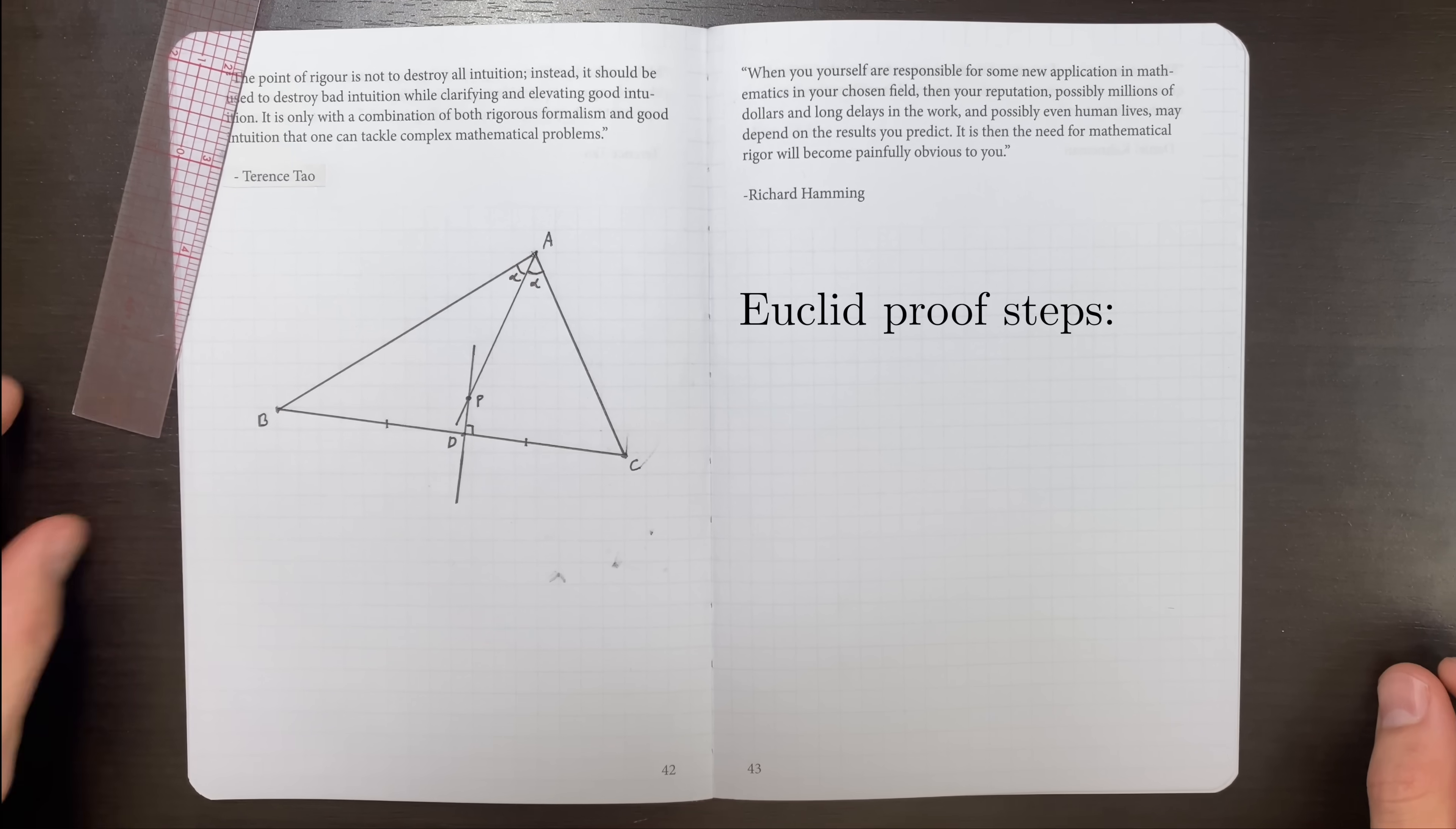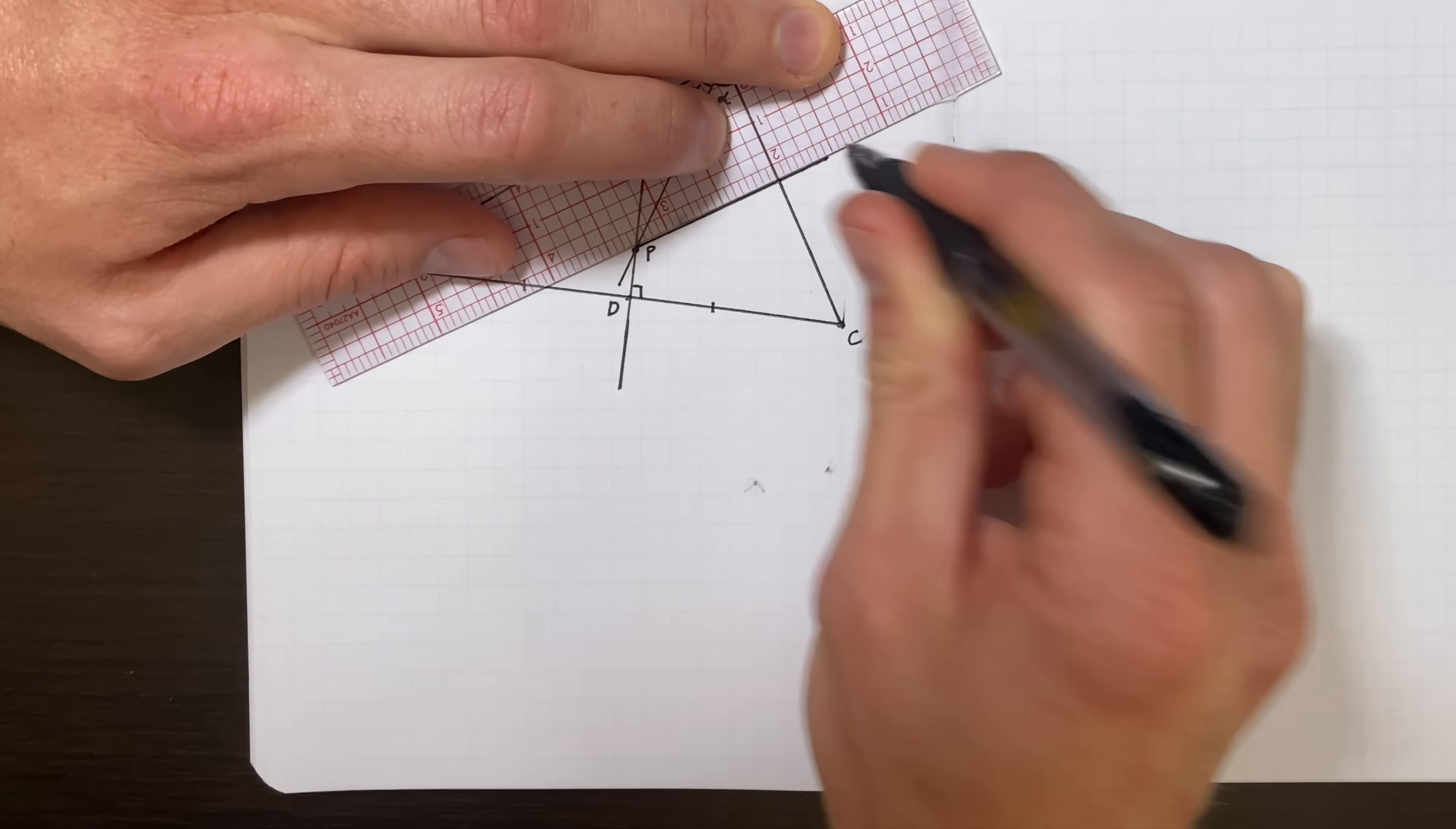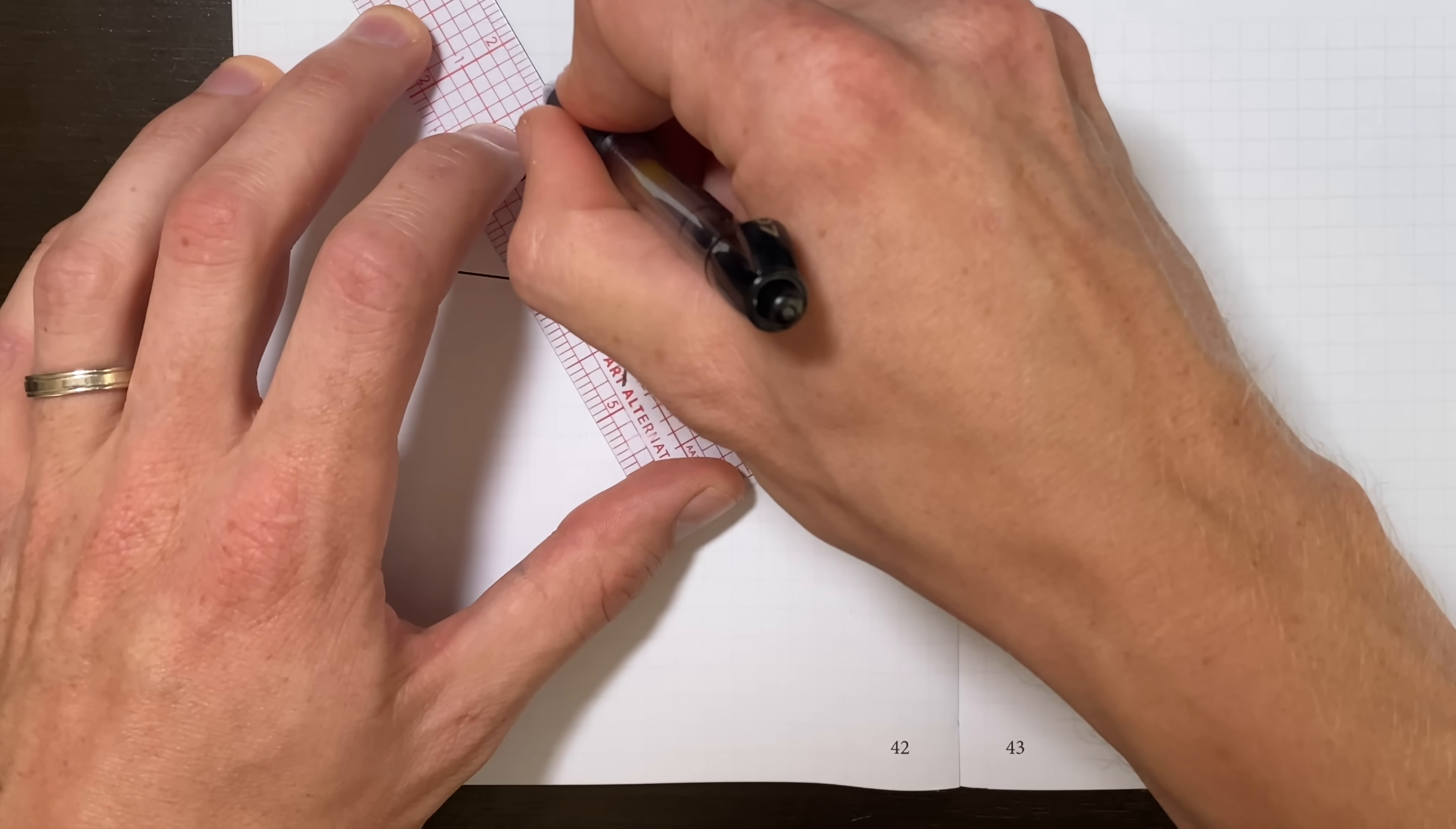The first thing I'll do is draw the perpendicular bisector to the line BC. So that means this angle here is 90 degrees, and this length is by definition the same as this length. And we'll label that intersection point d. And then next I will draw the angle bisector at a, which means by definition this little angle here is the same as this little angle here. I'll label both of them alpha. And we'll say that the point where these two intersect is p. And now, like a lot of Euclid style proofs, we're just going to draw some new lines, figure out what things must be equal, and get some conclusions.